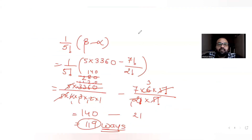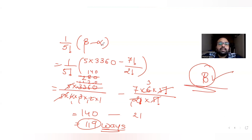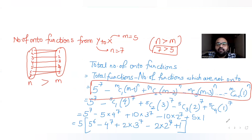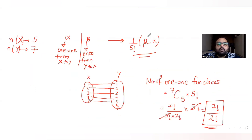The total value of (1/5!) × (beta − alpha) comes out to 119. The correct answer matches option B. I hope you've understood how to find the number of one-to-one and onto functions using these formulas. Like, share, and subscribe if you found this helpful. Thank you!